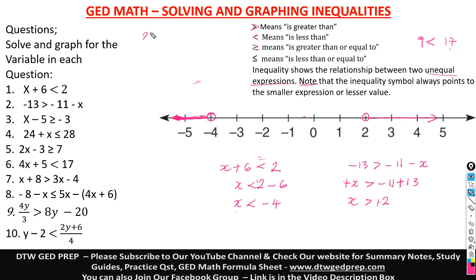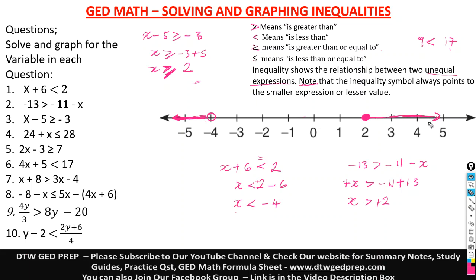Number 3 says x minus 5 greater than or equal to negative 3. Taking negative 5 to the other side gives x greater than or equal to negative 3 plus 5, which is positive 2. So x is greater than or equal to 2. We draw a circle at 2 and shade it, because the symbol says x is greater than or equal to 2 — it can be equal to 2, that's why it's shaded. Our arrow goes to the right.